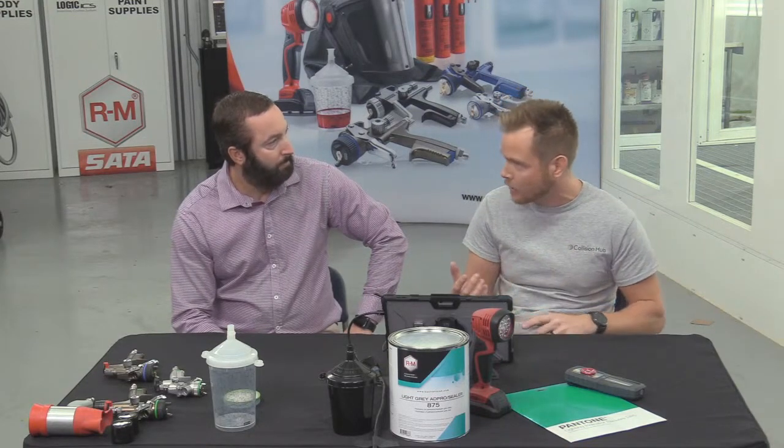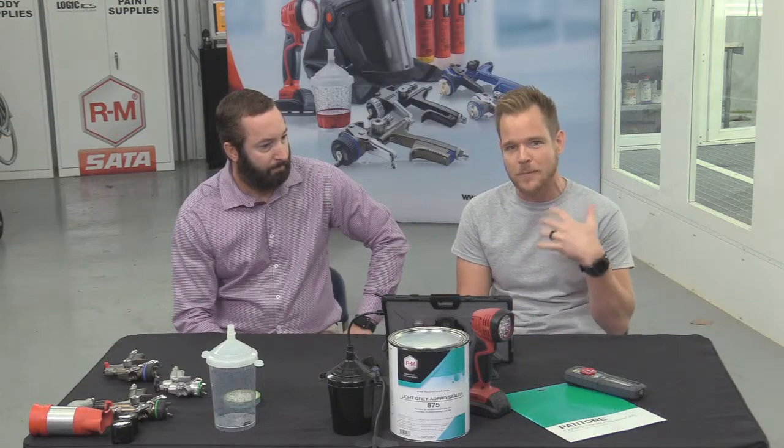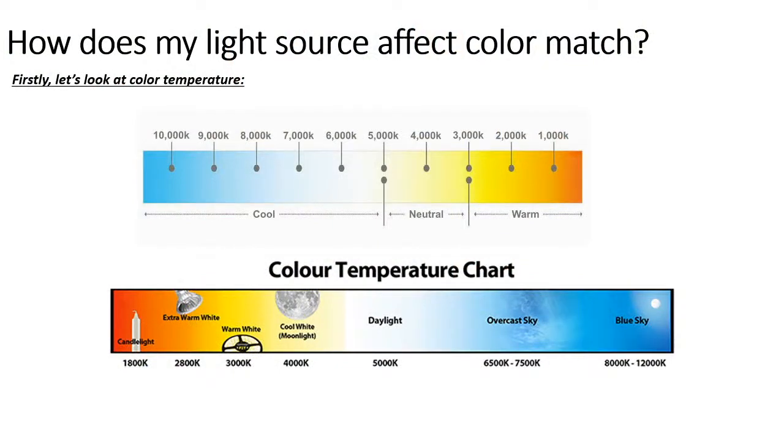That Kelvin range — from 1,000 warm to 10,000 cool — is really going to shift the way we perceive color as a painter, an estimator, or anyone working on the car. We have to be very mindful when picking our color-match area. We need something mimicking natural light. At 6,000–6,500K you have pure white light, and Chris, would you agree we need that neutral white with no color bias?